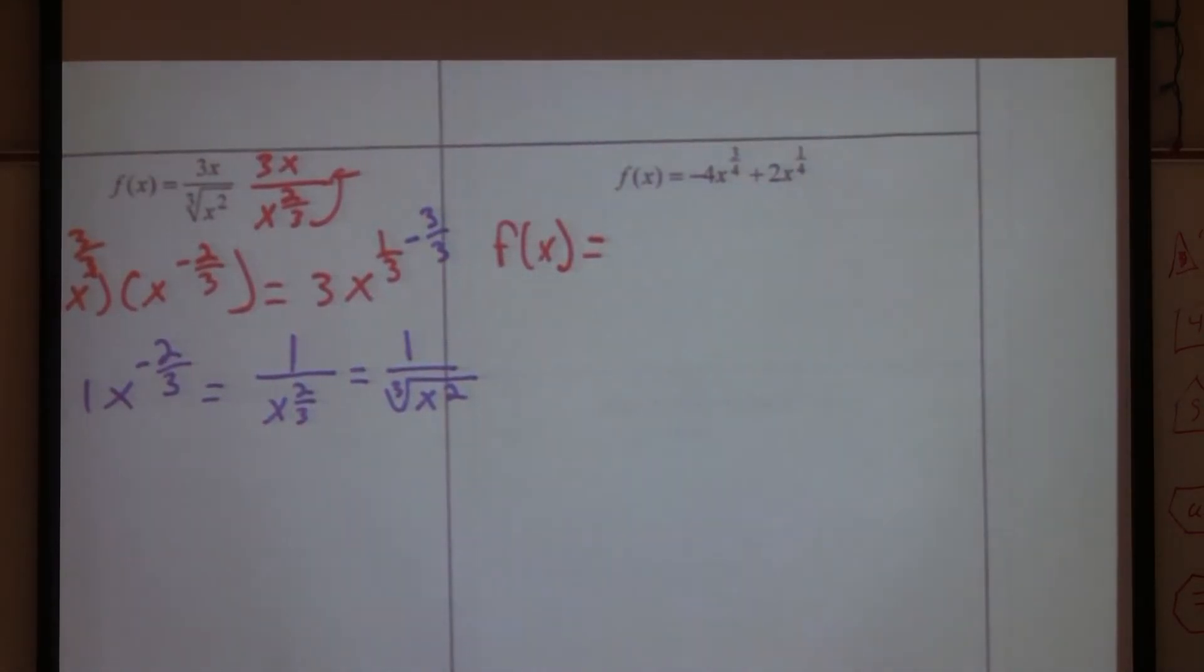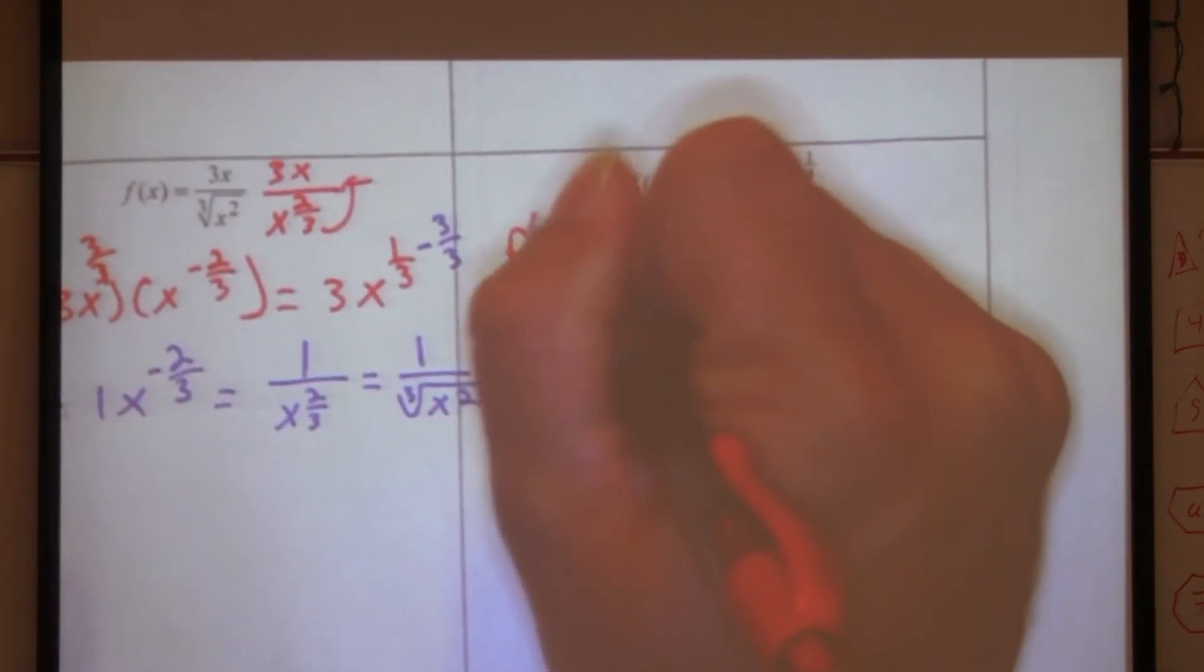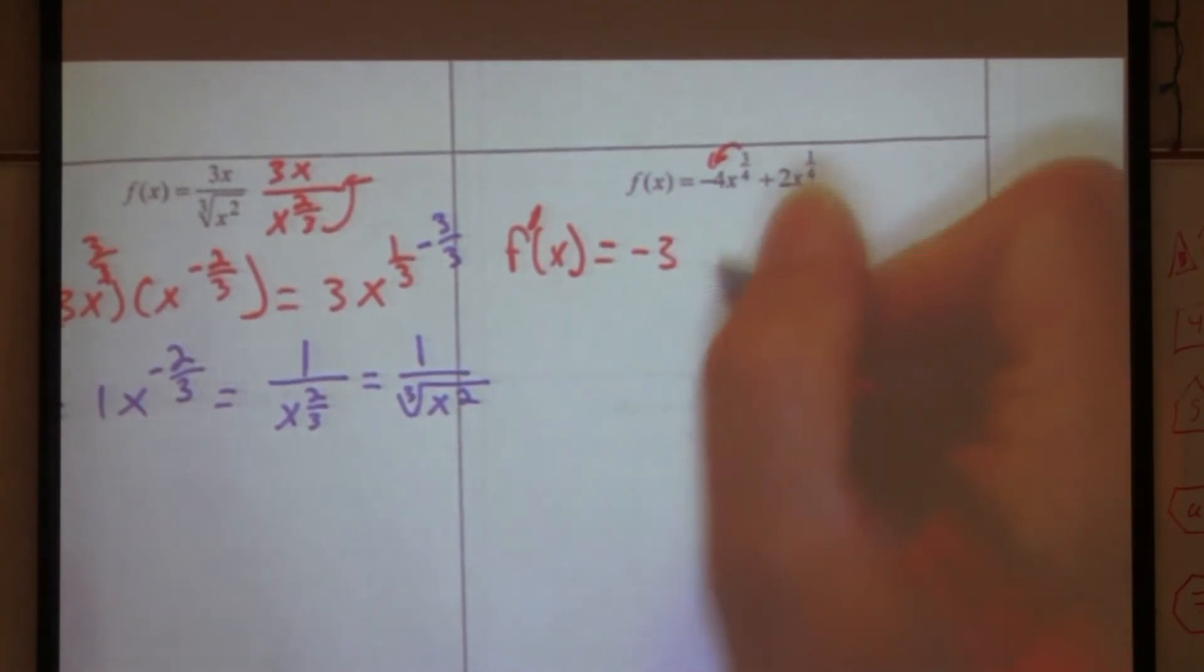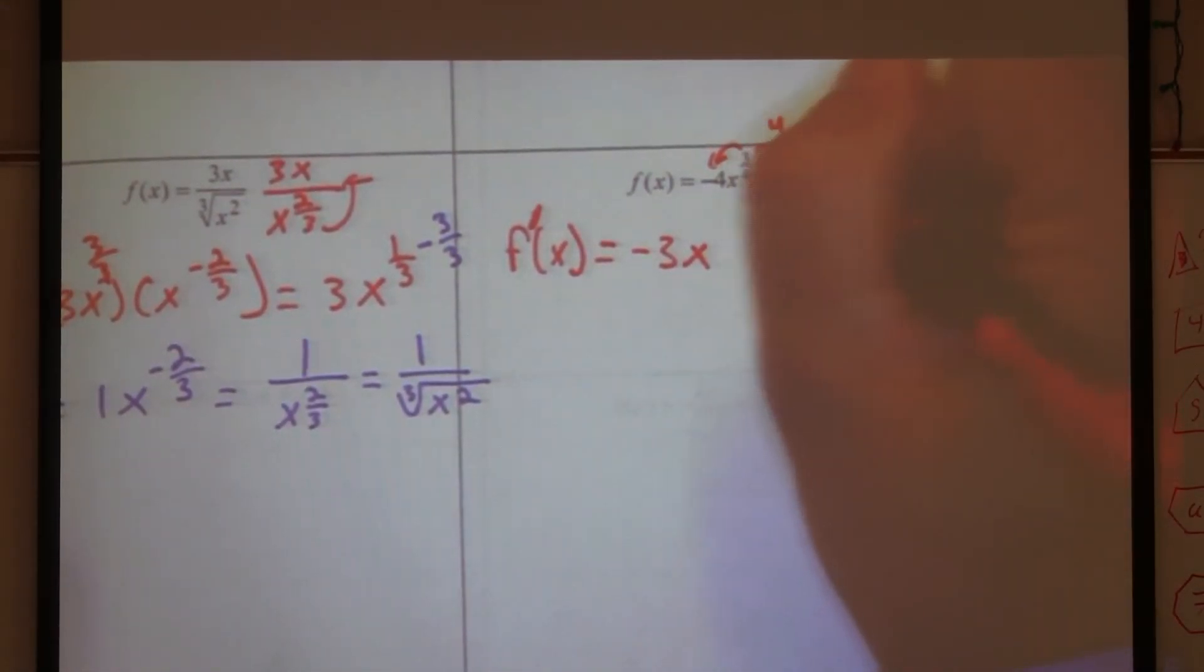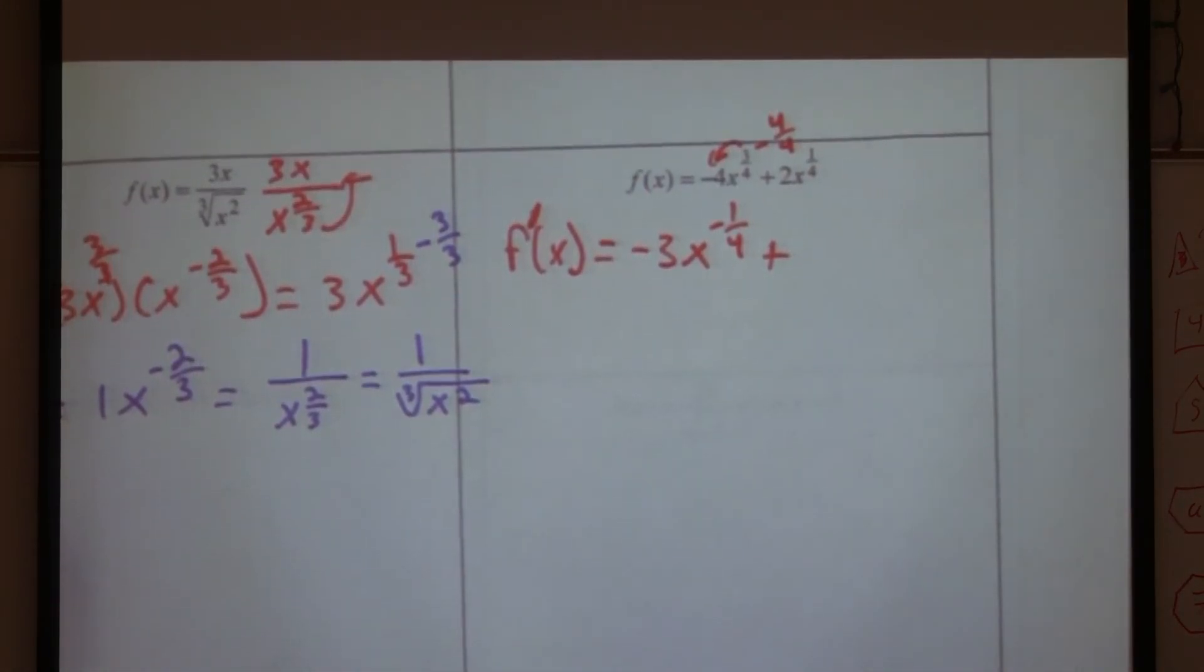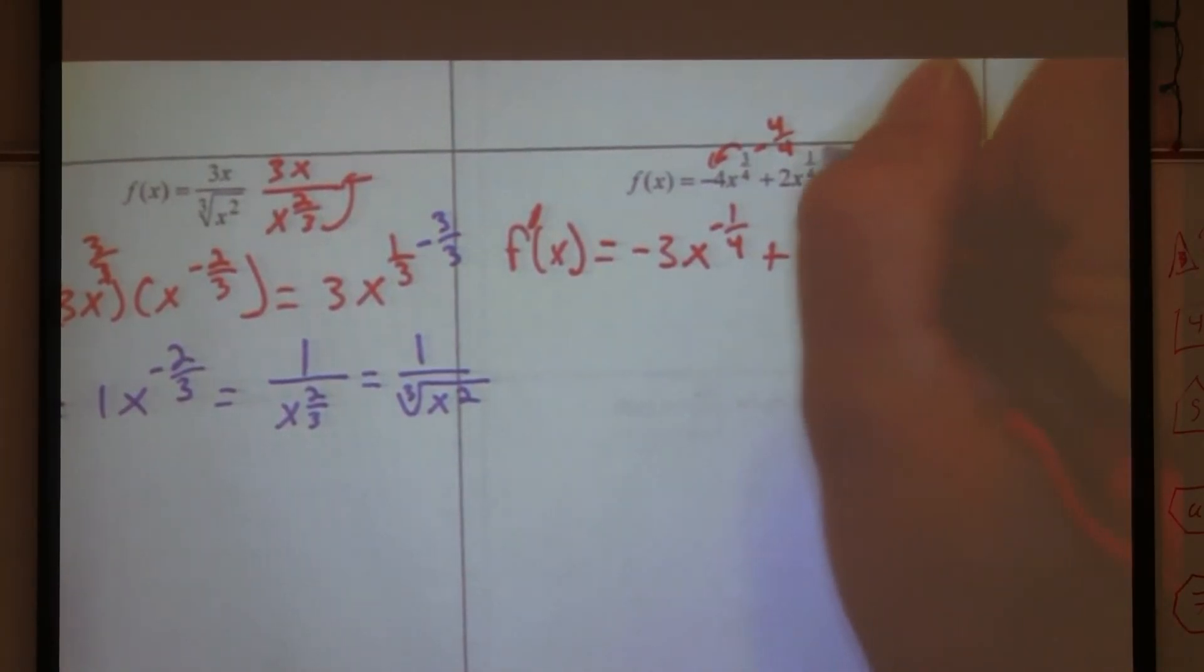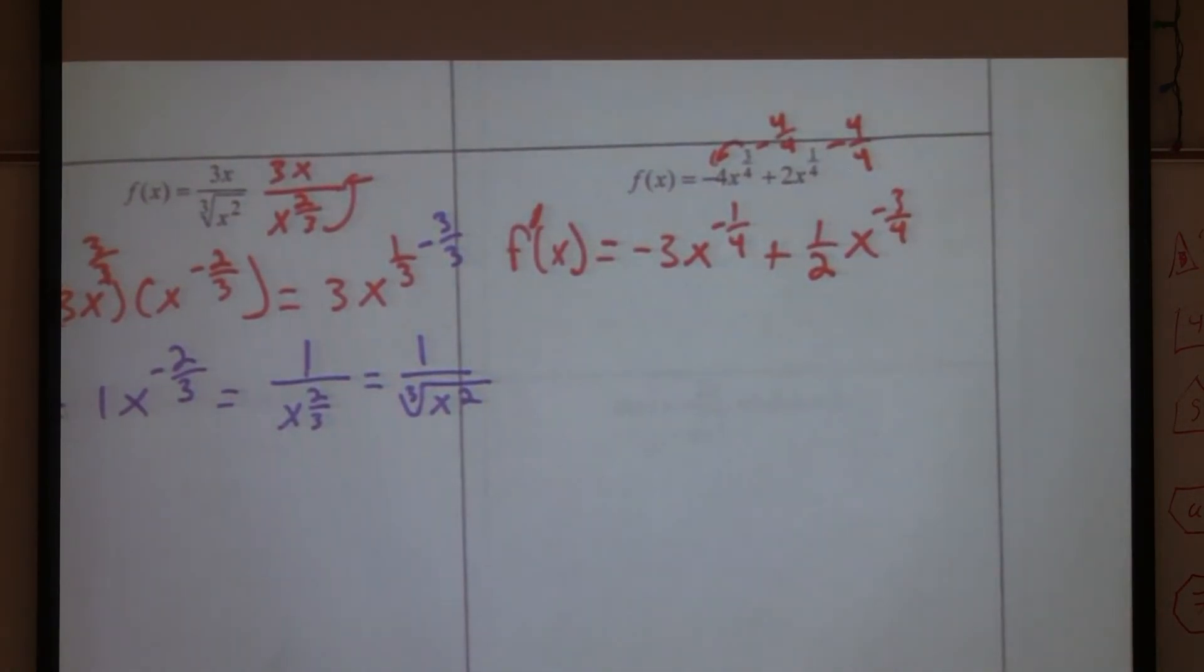Are we ready? I'm ready. Is this one ready to get the derivative already? Yeah. Oh, okay. So now I'm going to put F prime. So let's do it. What's three-fourths times negative four? Negative three. X to the what power? Negative one-fourth. We're taking away four over four. Plus one-fourth times two. That's two-fourths, right? What's two over four? One-half. X. Take away four over four again. Negative three over four. Are we good?